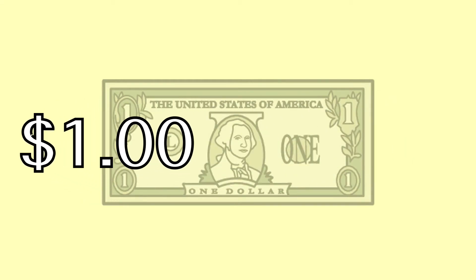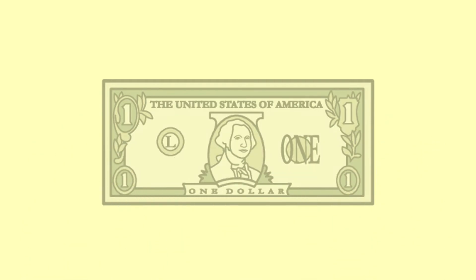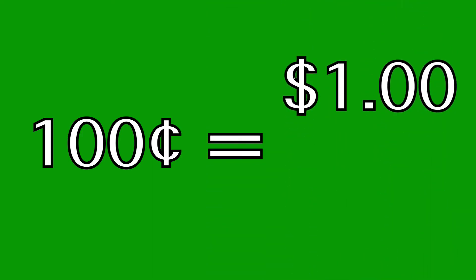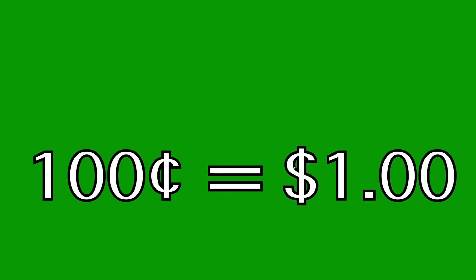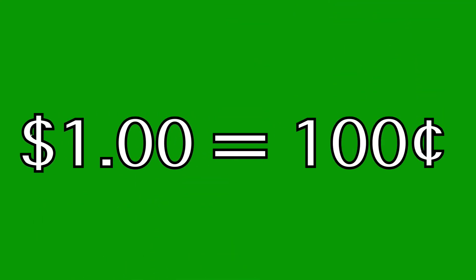In many of my songs, I have a section where the student can respond or answer, but I didn't want to do that here, because one of the main ideas is that two answers can be true. It can be one dollar, or it can be one hundred cents. So in this instance, I've found it better to test for comprehension after the song. One dollar is one hundred cents.